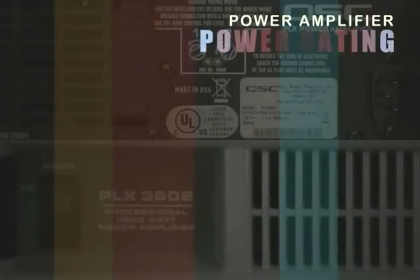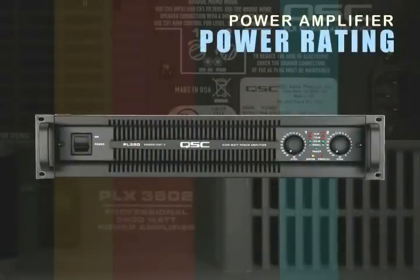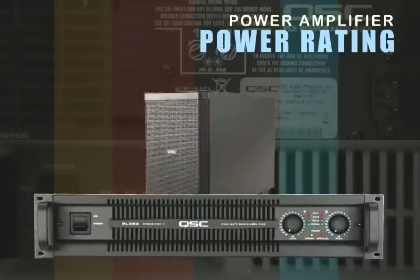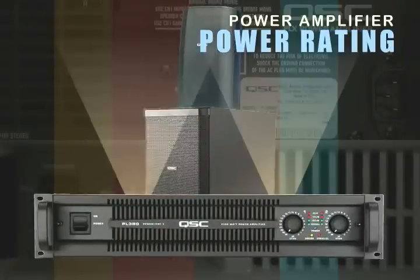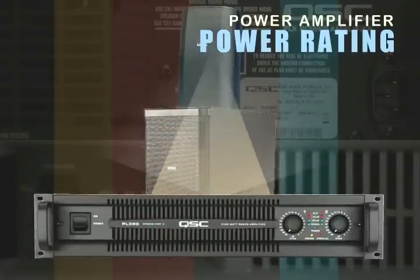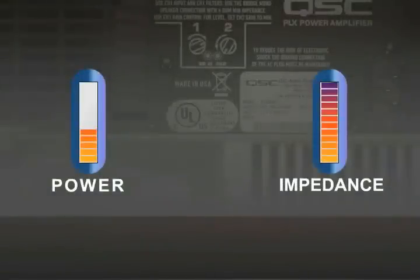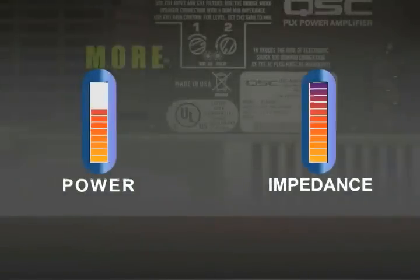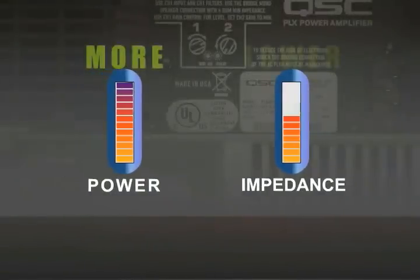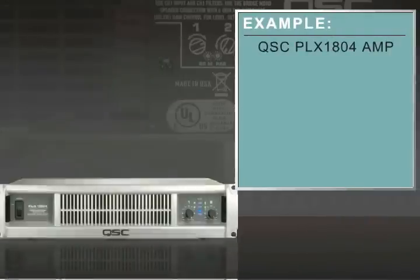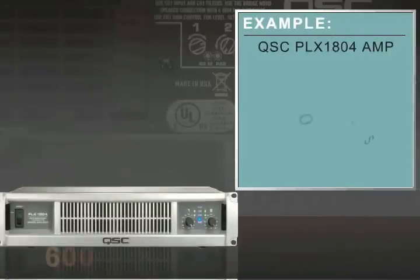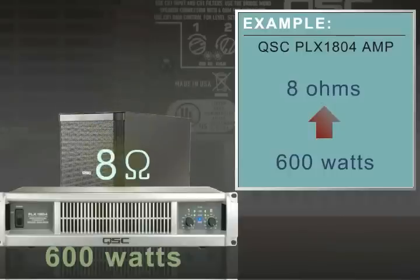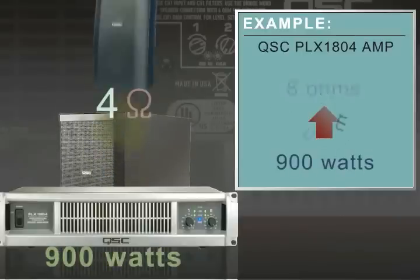An amplifier's power rating indicates the output power in watts based on the load that the amplifier sees. An amplifier will output more power to a load with a lower impedance. For example, a QSC PLX 1804 will output 600 watts into an 8 ohm load, but will increase to 900 watts if the load is 4 ohms.